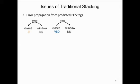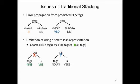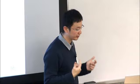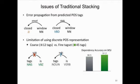The traditional stacking, or pipeline method, has several issues. Beyond error propagation, there's the limitation of using discrete part-of-speech representations. This discrete representation encodes less information when using a coarse tag set. For instance, using a fine tag set that distinguishes number allows the parser to learn that a plural noun should not be the subject of a singular verb. If we use the universal tag set with only 12 tags, the parsing accuracy drops by about 0.7% on the Wall Street Journal dataset — a remarkable loss.